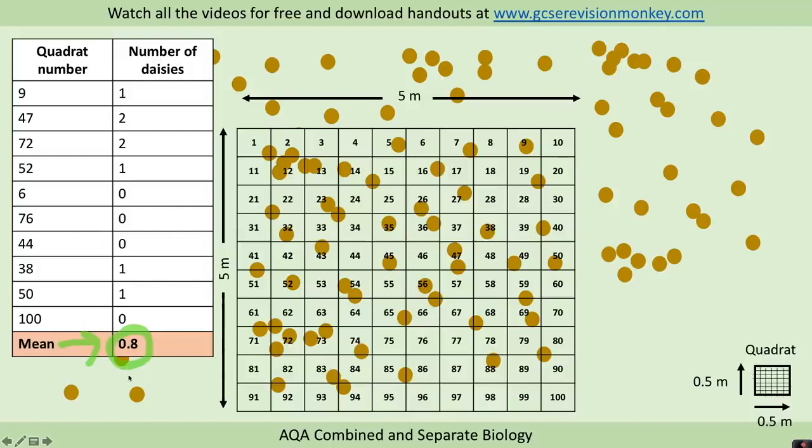And now we need to use this to estimate the number of daisies in the whole school field. So we need to know our area of our quadrat. So we do 0.5 times 0.5 and that's 0.25 metres squared.